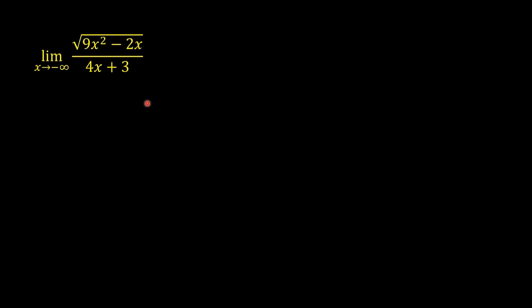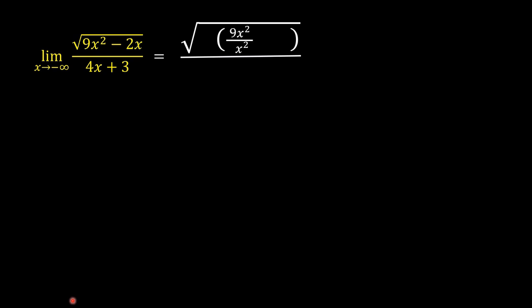So we should not apply direct substitution. What we shall do is divide each term of the radical in the numerator by the variable with the largest exponent — in this case x squared. So this is now equal to the square root of 9x squared over x squared minus 2x over x squared, and then multiply by x squared. You can write x squared after or before the parenthesis — it doesn't matter because multiplication is commutative.